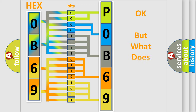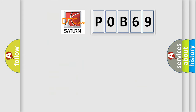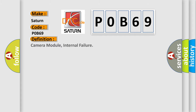The number itself does not make sense to us if we cannot assign information about what it actually expresses. So, what does the Diagnostic Trouble Code P0B69 interpret specifically for Saturn car manufacturers? The basic definition is: Camera module, internal failure. Here is a short description of this DTC code.